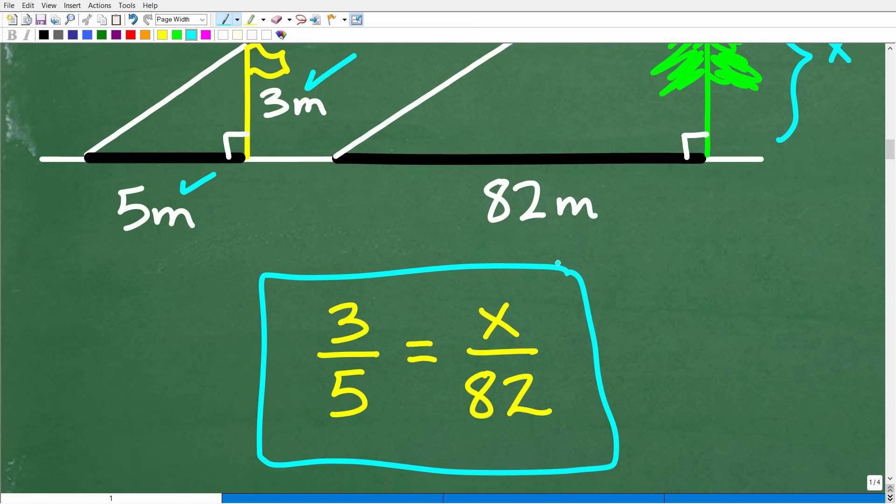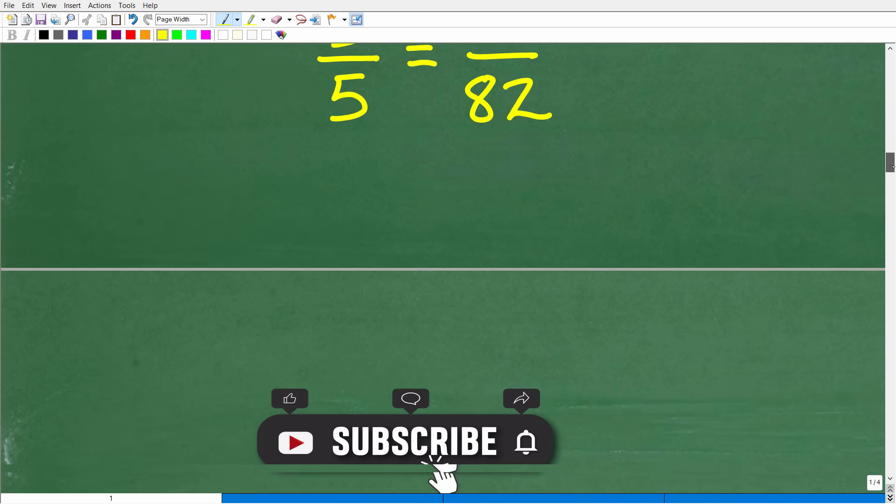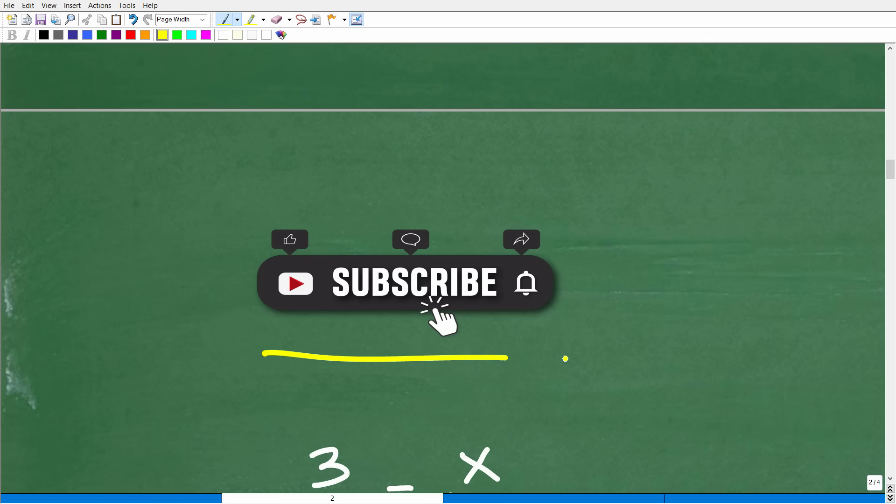all we need to do now is to solve for the variable x. So we have three over five is equal to x over 82. How do we solve for x? Well, let's go ahead and take the next step, which, of course, is having you quickly subscribe to my YouTube channel. Now, I wouldn't stop this lovely math video if I didn't have to, you know, ask for your support, okay?